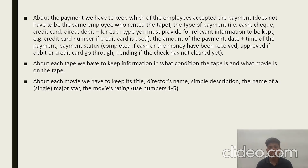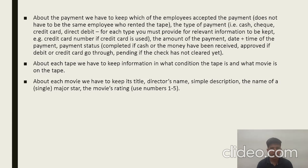For each payment type, relevant information must be kept — for example, credit card number if a credit card is used, check number if a check is used, the amount of payment, date and time of payment, and payment status: completed if cash or money received, approved if debit or credit card goes through, pending if the check has not cleared yet. About each tape, we keep its condition and what movie is on it. For each movie, we keep its title, the director's name, a simple description, the name of the major actor, and movies are rated from one to five.